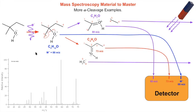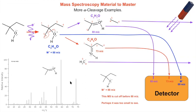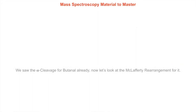Here's the actual SDBS mass spectrum for that molecule. The molecular ion at 88 would be off to the right — it was cut off on this particular spectrum. The m/z 59 fragment is the base peak, the tallest one. The other alpha cleavage gives the m/z 73 signal, just as we predicted. Now let's do a McLafferty for the next example.